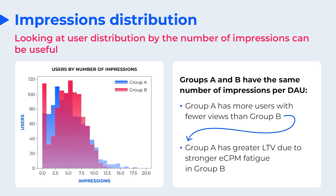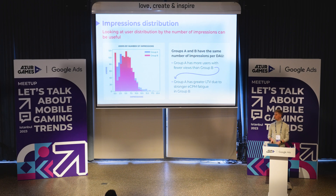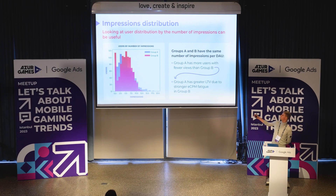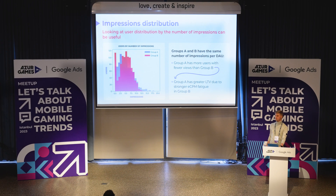When analyzing ads, it's also important to look at impression distribution among users. There are cases when you have the same average number of impressions per user, but different LTV between groups. This happens because of eCPM fatigue with every consecutive view for each user. For example, looking at group B on this graph, there are many users who haven't watched any ads, but also many users who watched a lot of ads. In this case, LTV in group B will be lower than in group A. That's why it's important to look at this distribution.